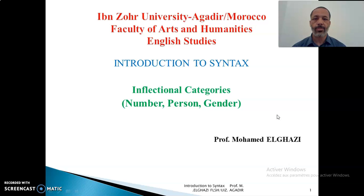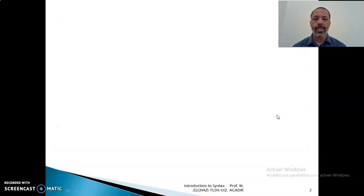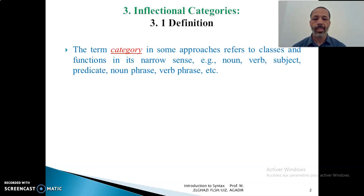As we have done for the previous categories, we are going to see the definition of inflectional categories, and we are going to see the inventory of these inflectional categories. We will study them each one per se. Concerning the definition of the inflectional categories, the term category in some approaches refers to classes and functions in its narrow sense. For example, a noun is a category, and verbs are a category.